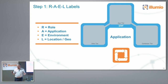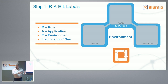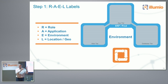Then you have an Application — this is an application class. You might have multiple instances of this application. The other dimension is Environment. You might have multiple environments hosting this application as it moves through the software development cycle from dev to test to production.